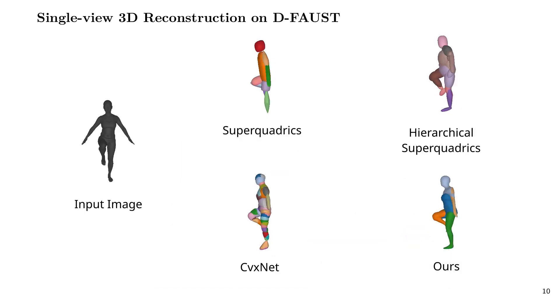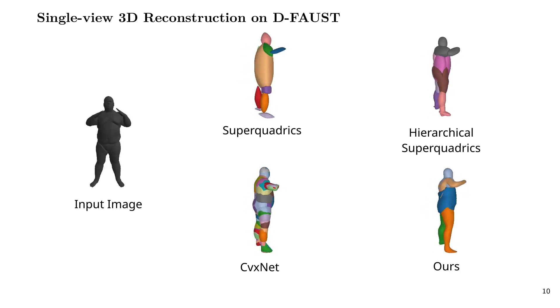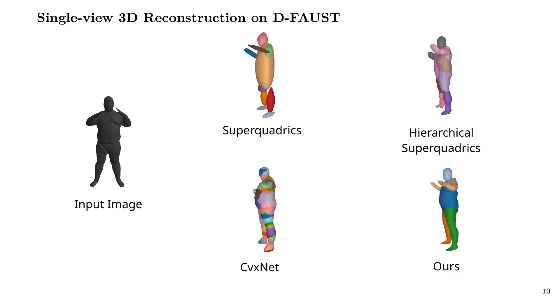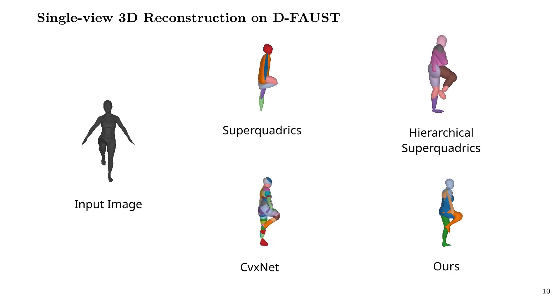We evaluate our model on the 3D reconstruction task on Dynamic FAUST and show that neural parts result in semantically meaningful abstractions such as legs and arms, whereas simpler primitives require an order of magnitude more parts to accurately represent the target object. As a result, simpler primitives do not correspond to meaningful abstractions.